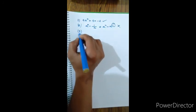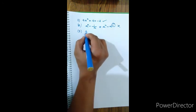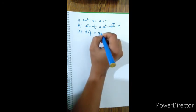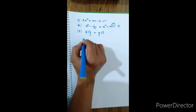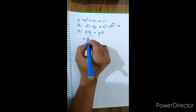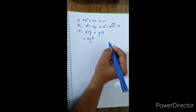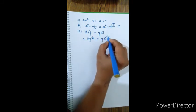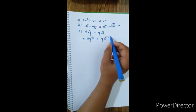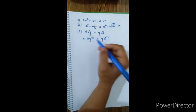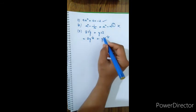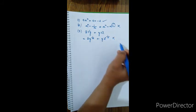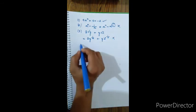Number 3: root y, which is y to the power of 1 by 2. The exponent 1/2 is not a positive integer — it is a fraction. Since polynomials must have non-negative integer powers, this expression is not a polynomial.